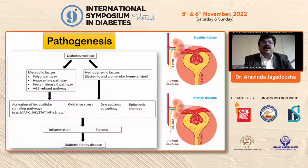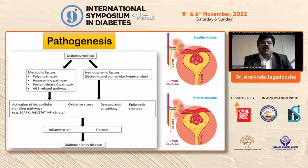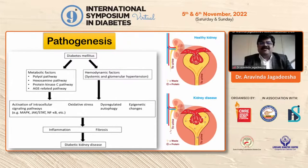Regarding pathogenesis, this is the proposed mechanism of how diabetes causes diabetic kidney disease. Metabolic factors such as the polyol pathway, hexosamine pathway, protein kinase C pathway, and AGE-related pathways, along with hemodynamic factors like systemic and glomerular hypertension, lead to activation of intracellular signaling pathways, oxidative stress, dysregulated autophagy, and epigenetic changes — leading to inflammation, fibrosis, and finally diabetic kidney disease. On the right-hand side you can see how a healthy kidney compares to a diseased kidney.